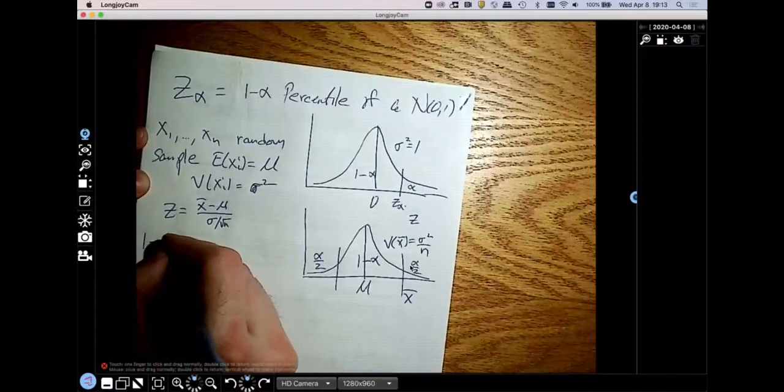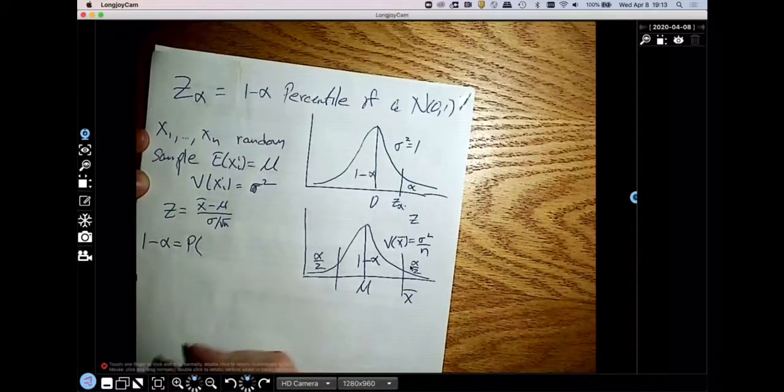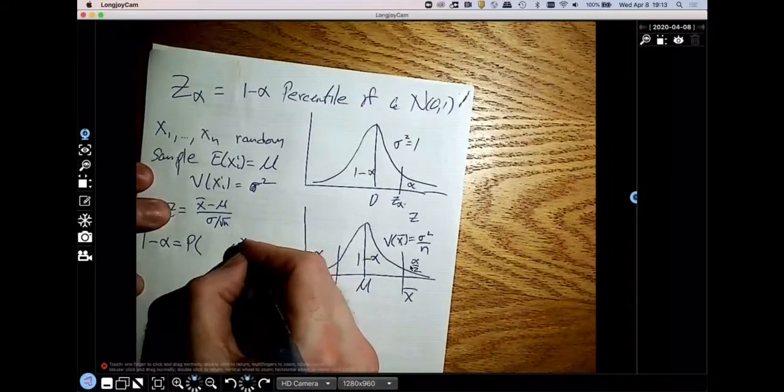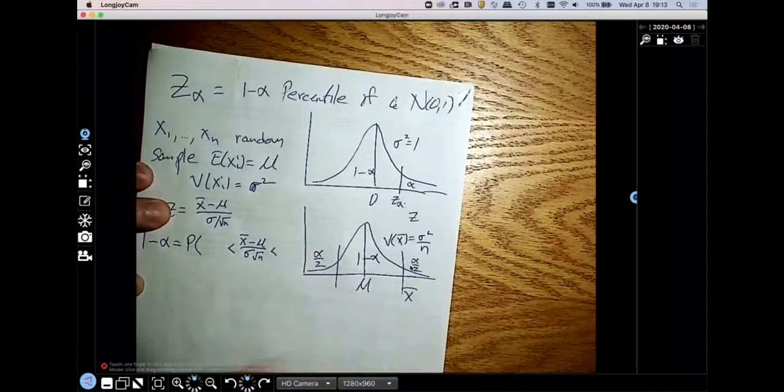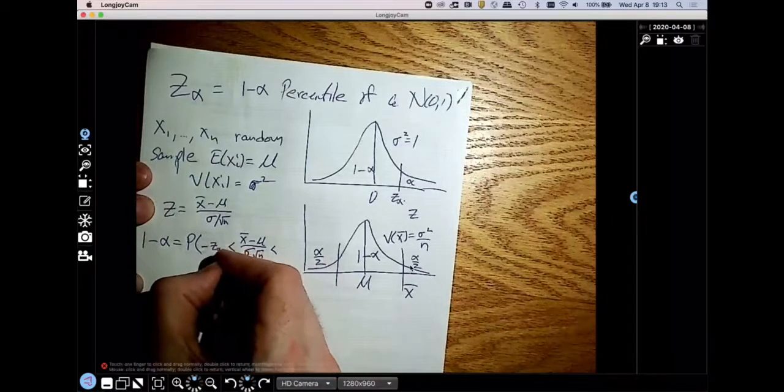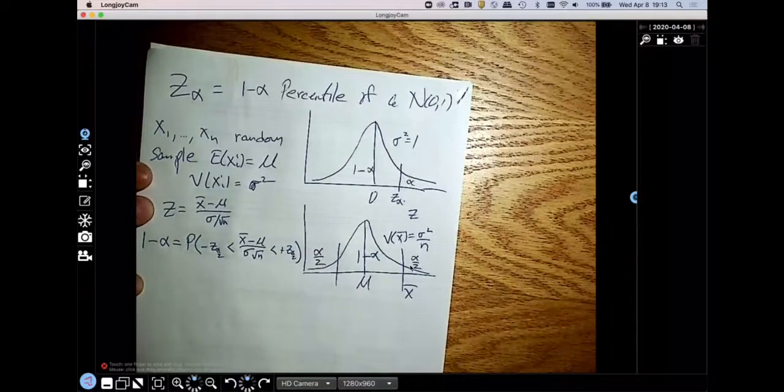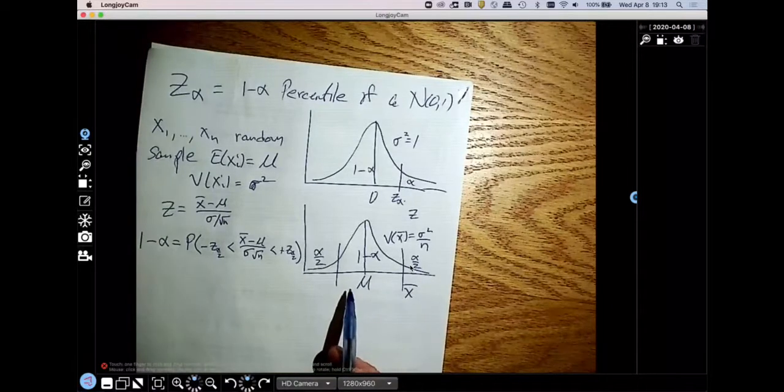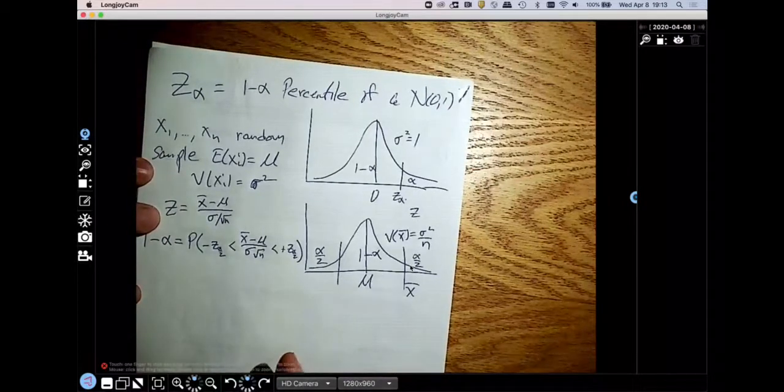So a true statement is that 1 minus alpha equals the probability that X bar minus mu over sigma divided by the square root of N is definitely between negative Z alpha by 2 and positive Z alpha by 2. That just follows from the fact that X bar is normal.